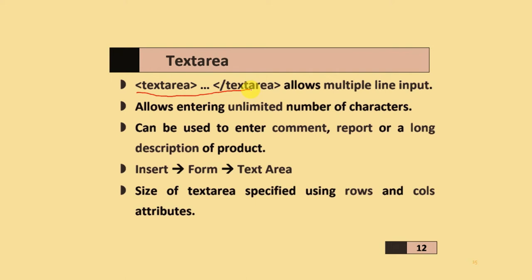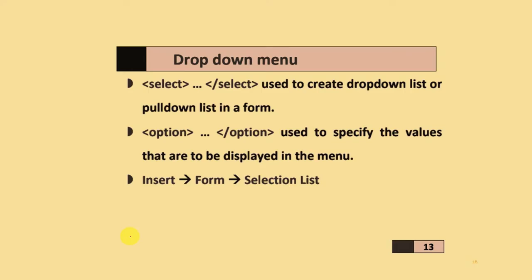The text area tag is used for multi-line text input. It allows an unlimited number of characters and can be used to enter comments, reports, and long descriptions of a product. You can add a text area in Composer software using Insert > Form > Text Area. The size of the text area is specified using the rows and columns attributes.